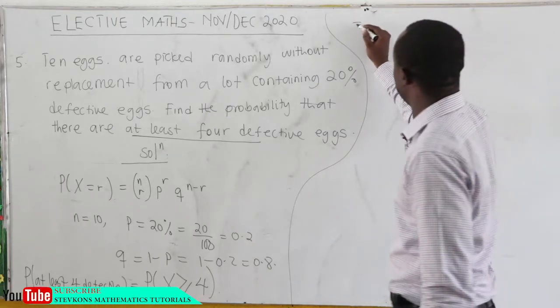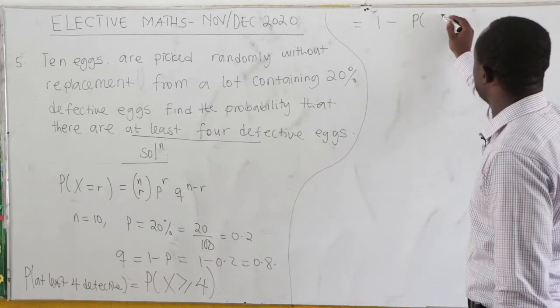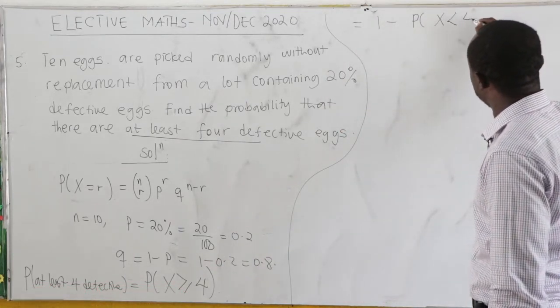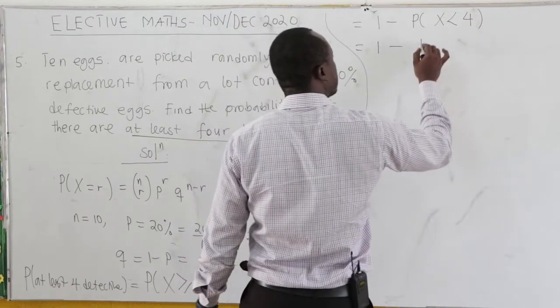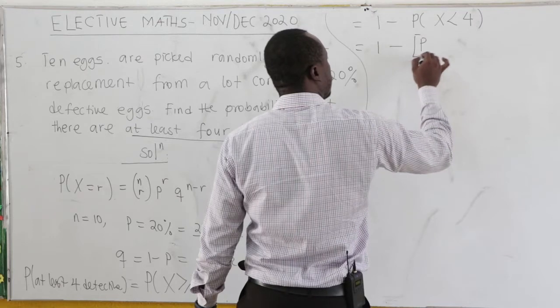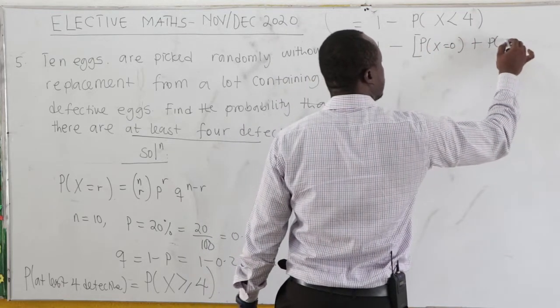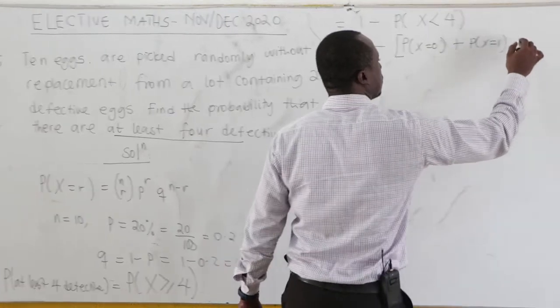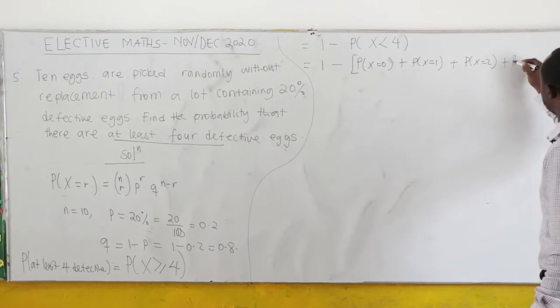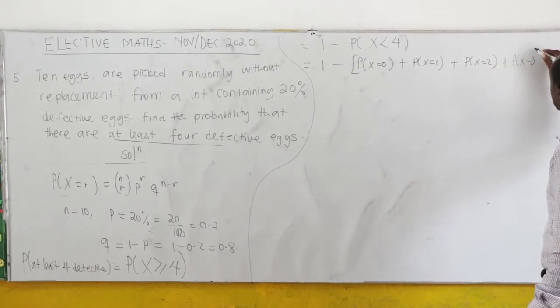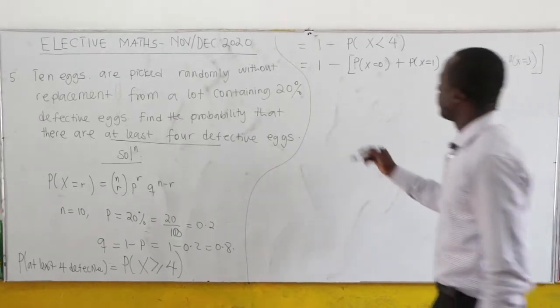And this is the same as 1 minus the complement of this, which is X < 4. And this is the same as 1 minus P of: first we consider when X = 0, plus P when X = 1, plus P when X = 2, plus P when X = 3, less than 4. So this is what we consider.